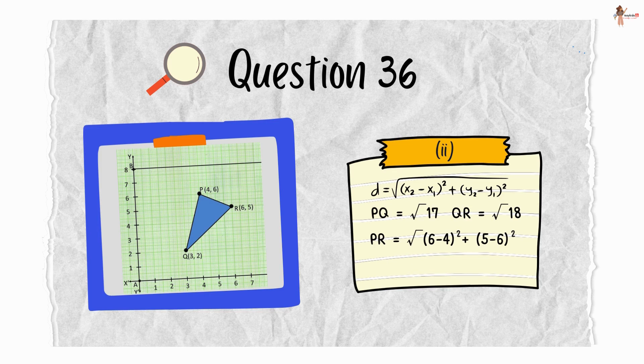Although it is not asked, let's calculate PR also because it will be required for the last part of the question. So PR is equal to root 5.